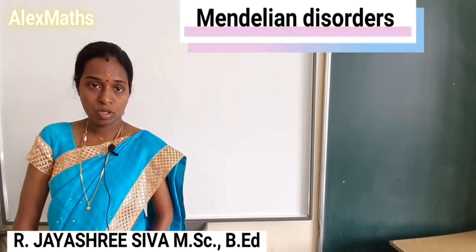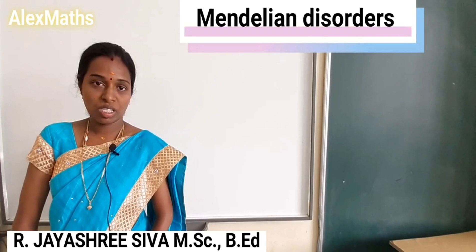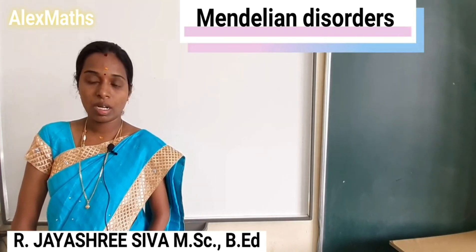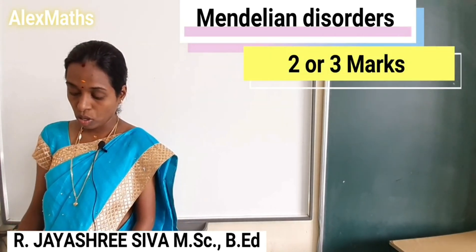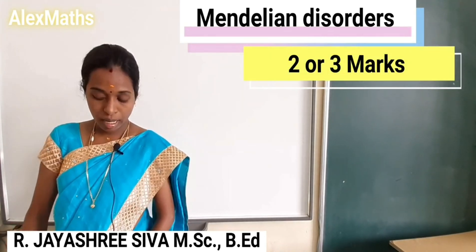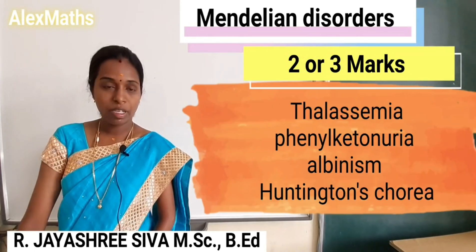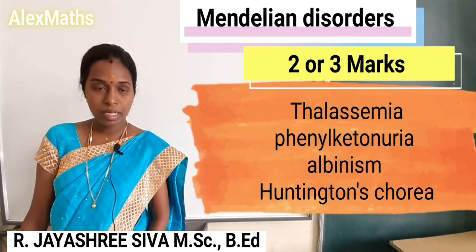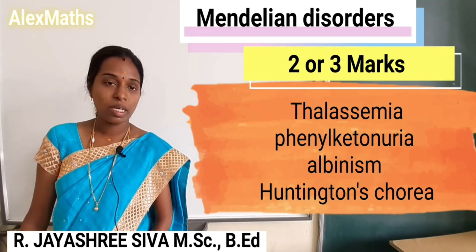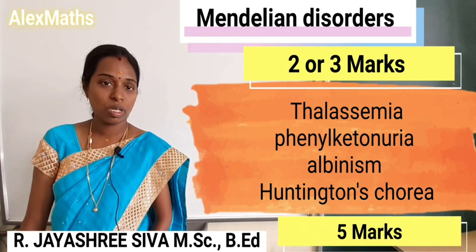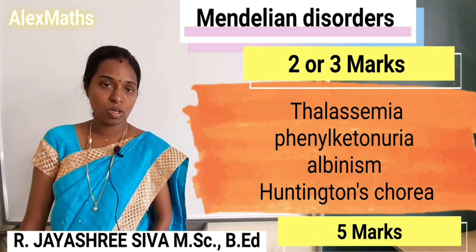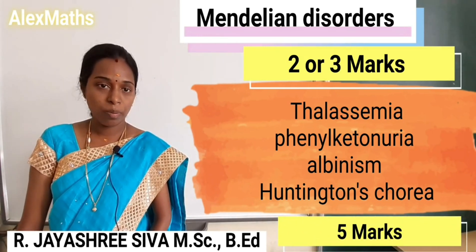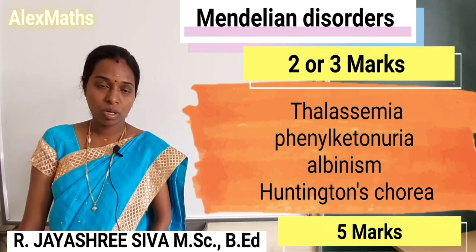What are the Mendelian disorders? The Mendelian disorders include: Thalassemia, Phenylketonuria, Albinism, and Huntington's disease. These are diseases under genetic disorders and Mendelian disorders — these are important questions.